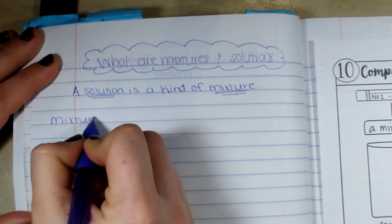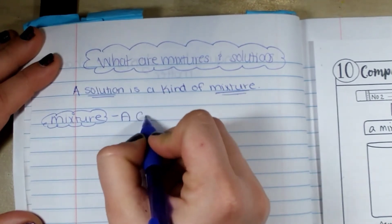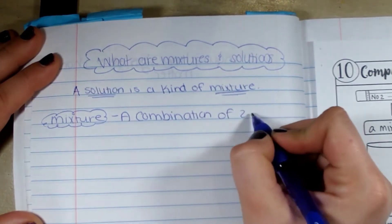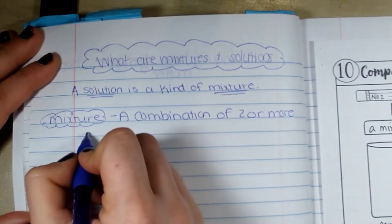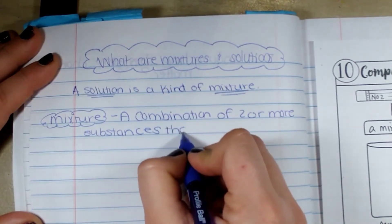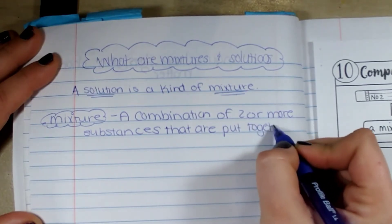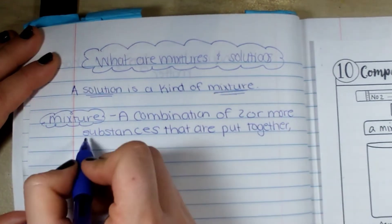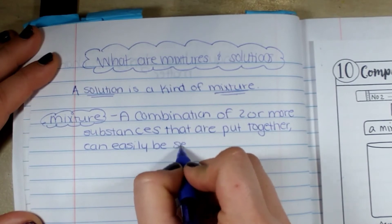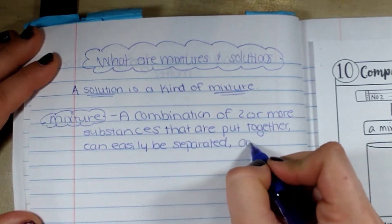So what is a mixture? A mixture is a combination, and this will be in your vocabulary too, a combination of two or more substances and they do not have to be the same state of matter, that are put together, can easily be separated, and do not make a new substance.